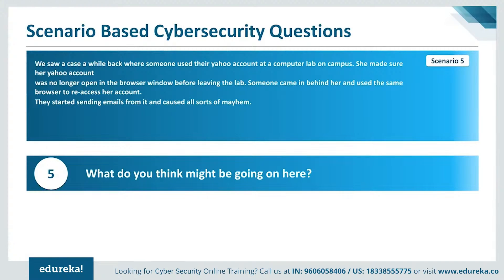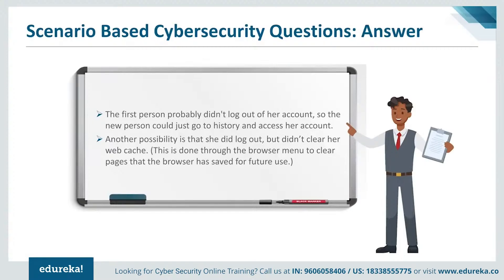Scenario 5: Someone used her Yahoo account at a campus computer lab and made sure it was no longer open in the browser window before leaving. Someone came in after her and used the same browser to re-access her account, sending emails and causing mayhem. The first person probably didn't log out, so the next person could access it via browser history. Another possibility is that she did log out but didn't clear her web cache — this is done through the browser menu to clear pages saved for future use.